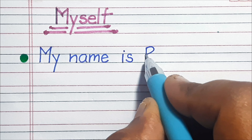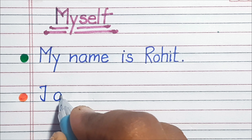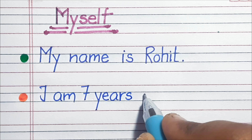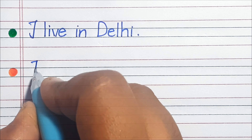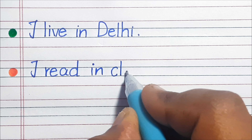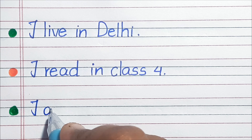My name is Rohit. I am 7 years old. I live in Delhi. I read in class 4. I am a student of RSPS.